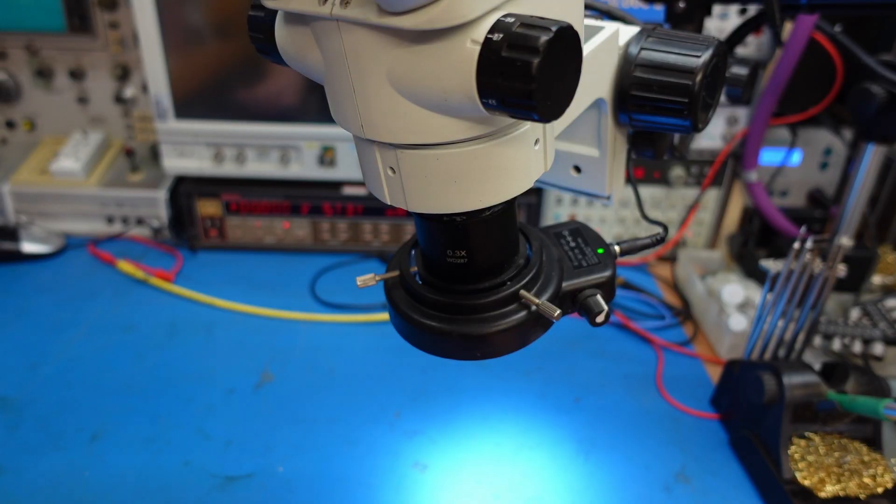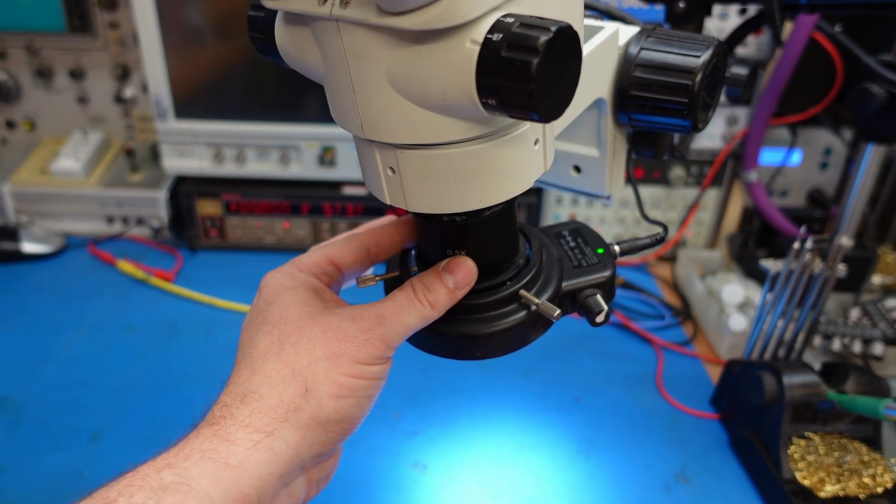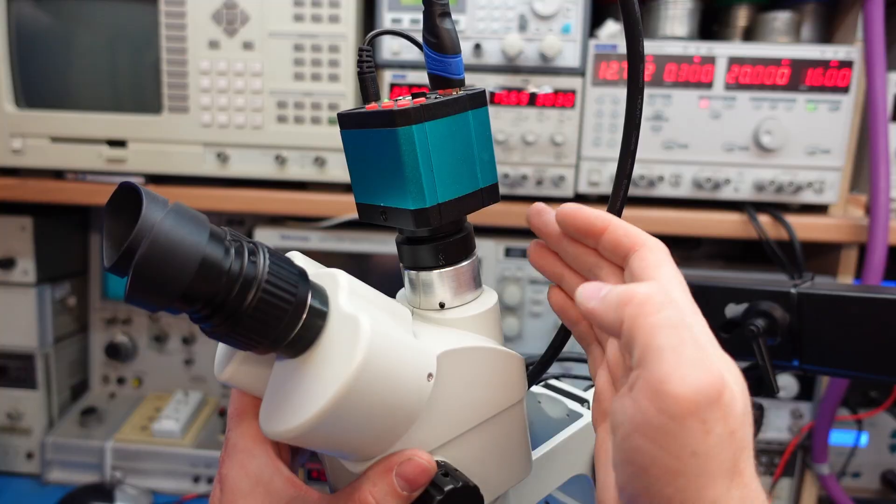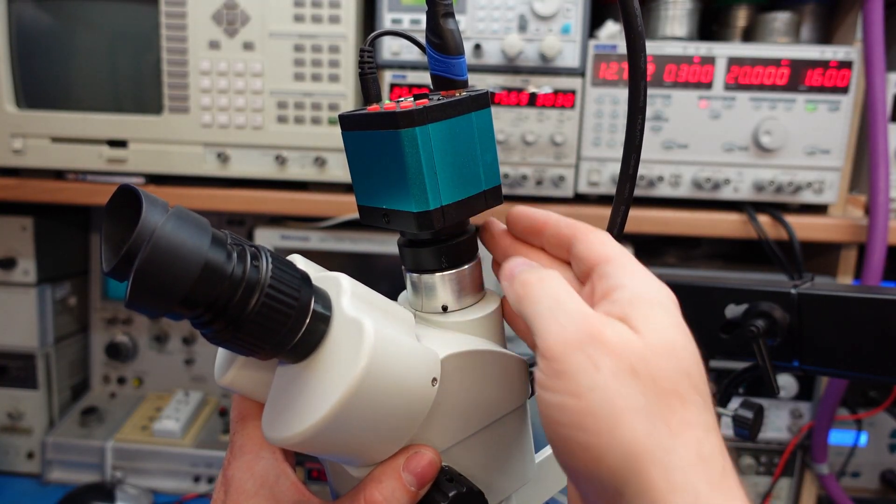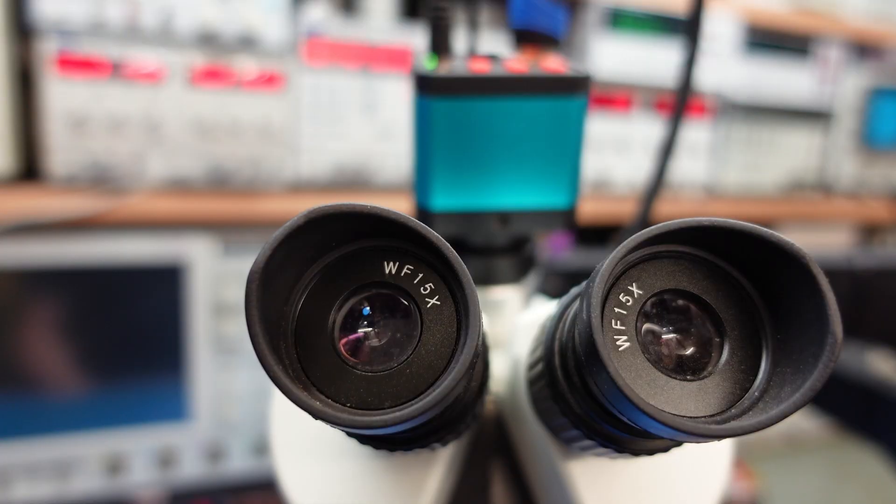So this scope is like a no brand Chinese model, similar to an AmScope I think. And as standard it came with a 0.5 Barlow lens. I've changed that to a 0.3, and that's because I'm using a 0.35x lens for the camera. I machined a special mount here to get it down low enough. Then I'm using 15x eyepieces in this.